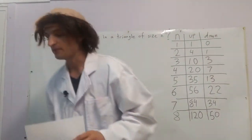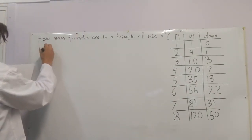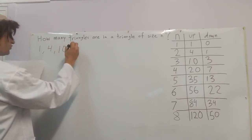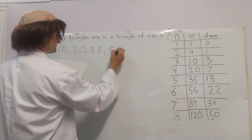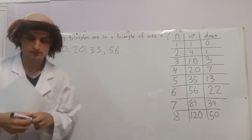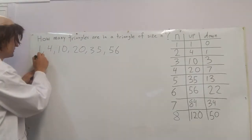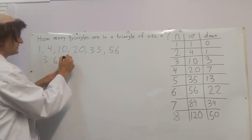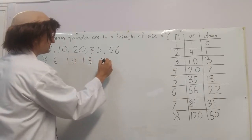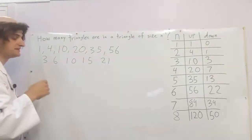Here is how we'll develop a formula. We write out the sequence: 1, 4, 10, 20, 35, 56, and we could go on. This is a polynomial, and we'll find its equation by taking the difference between each term. From 1 to 4 the difference is 3; from 4 to 10 it's 6; then 10, 15, 21. We keep taking differences until we reach something constant.